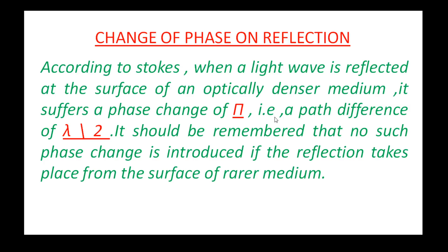The light is reflected from an optically denser medium. There are two types of medium: denser medium and rarer medium. Rarer medium has a refractive index mu equal to 1. Greater than 1 is a denser medium — this includes liquids, solid surfaces, water, and glass; these are denser media.